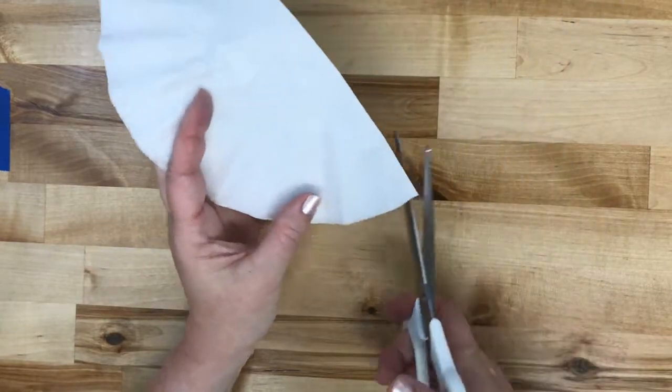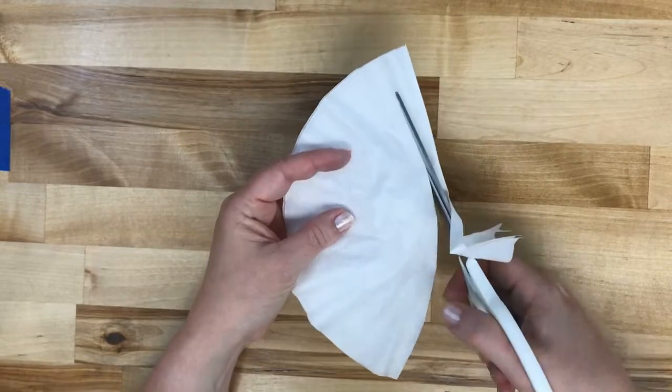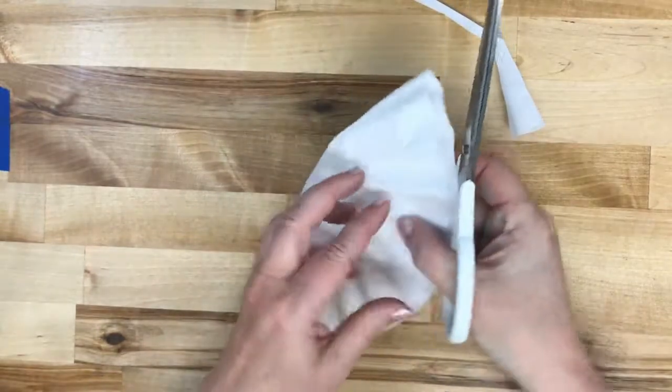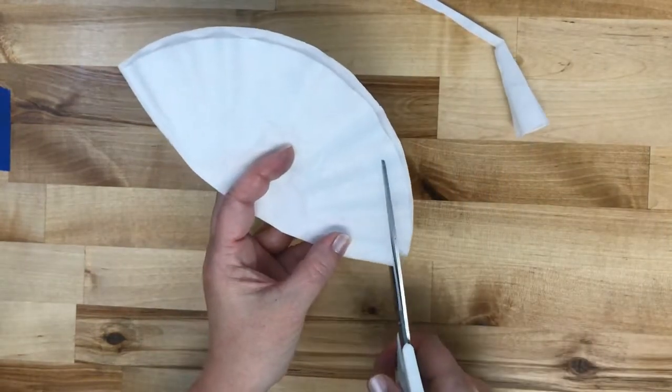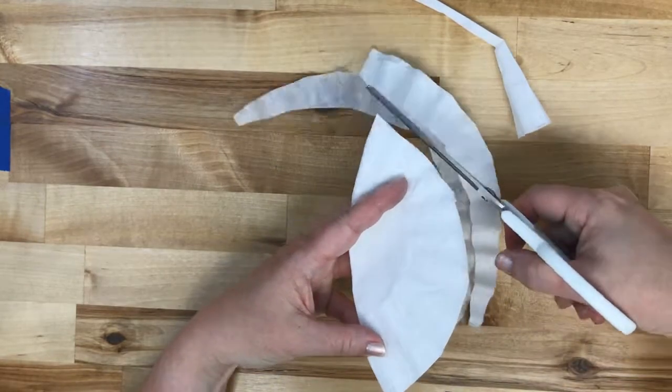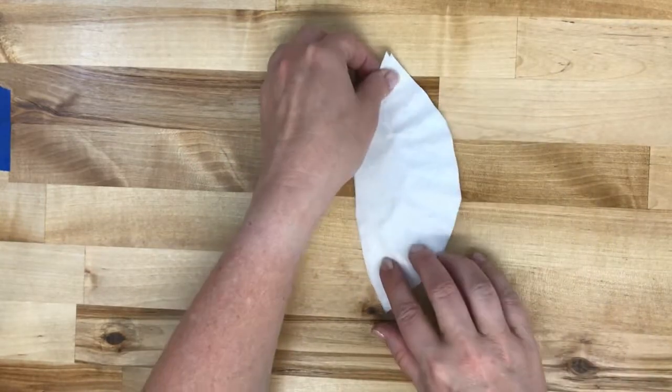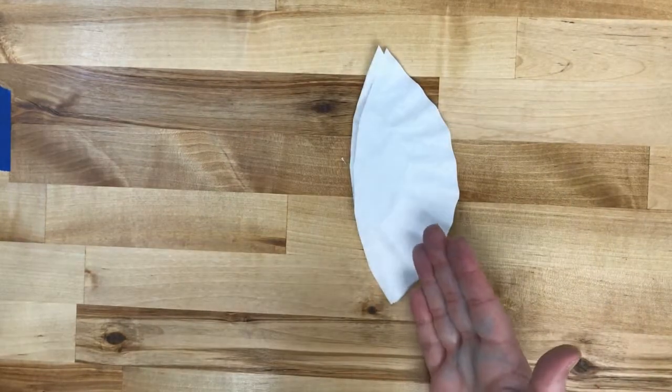Then you're going to take a pair of scissors and cut an oval shape. It doesn't have to be real neat, and it's even better if it's not real centered, because if it's a little bit off, it actually will end up looking more like a natural feather.